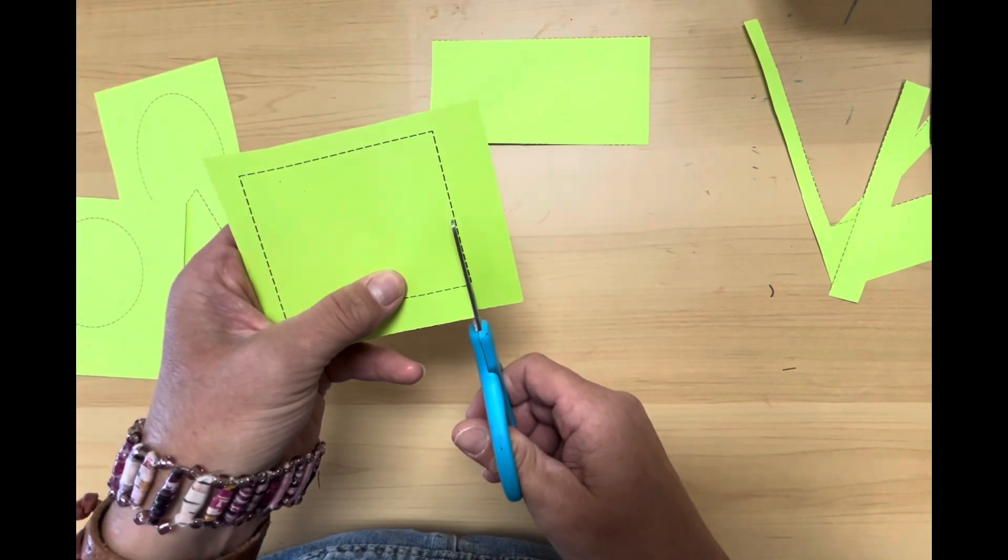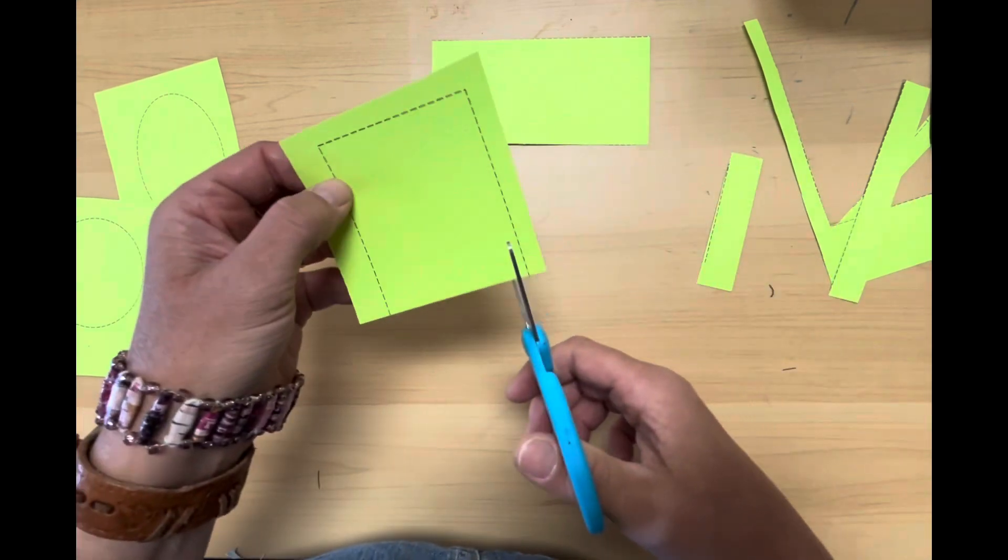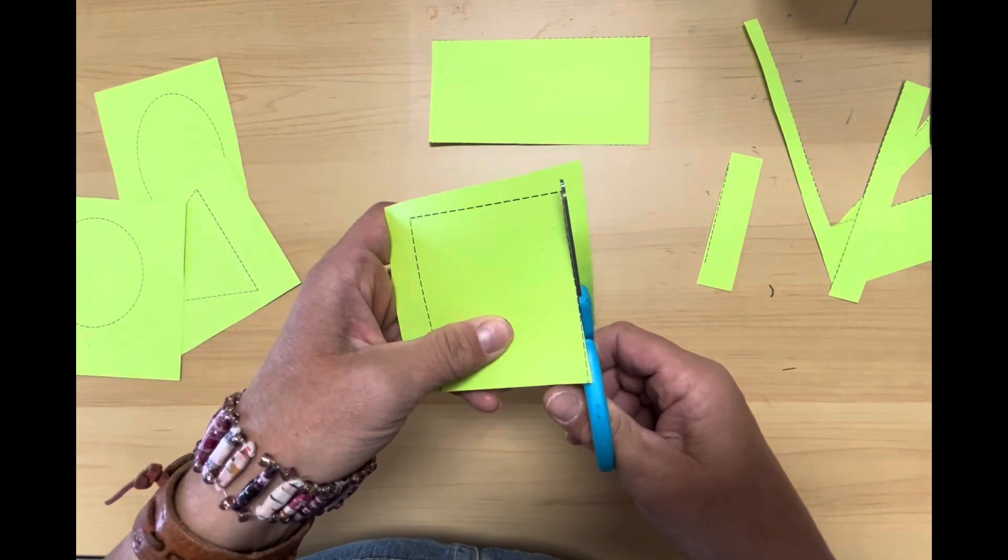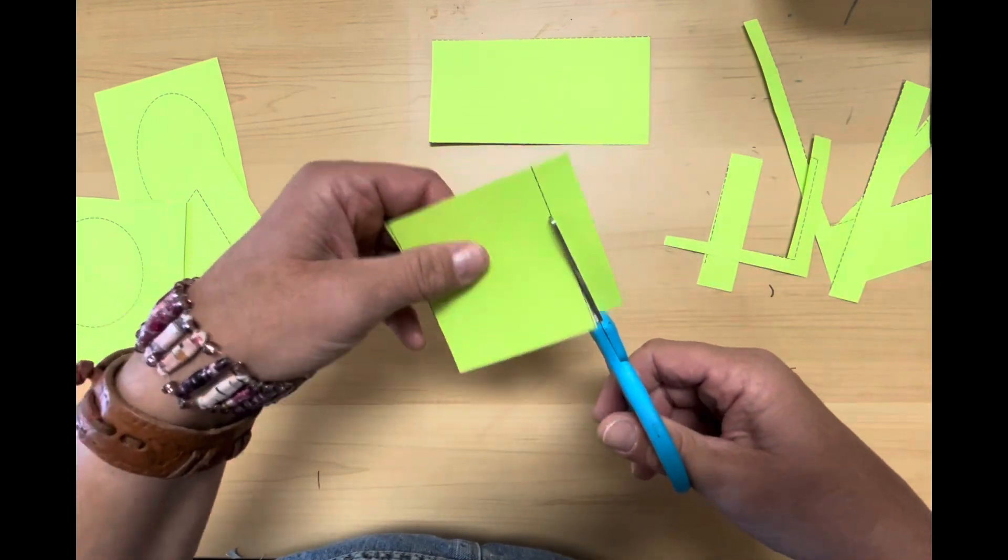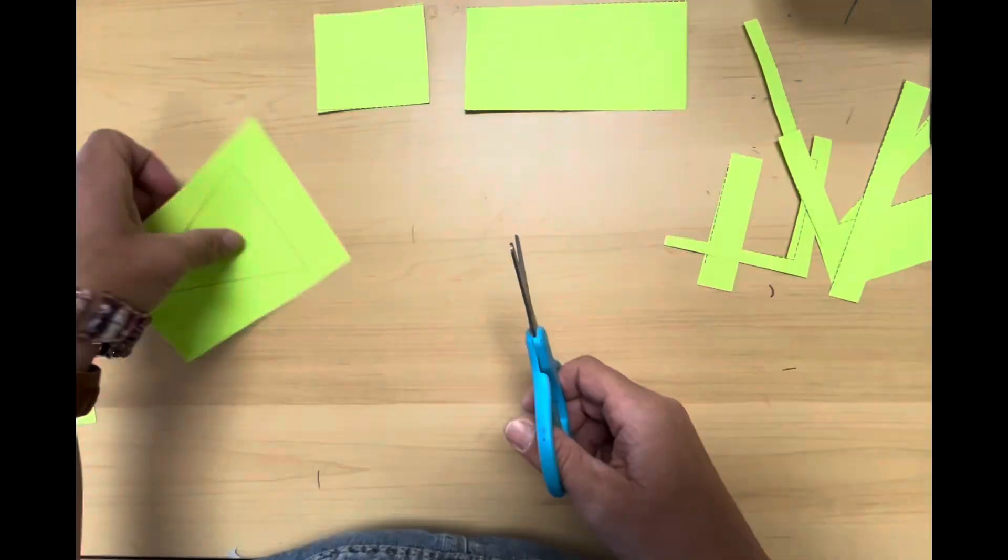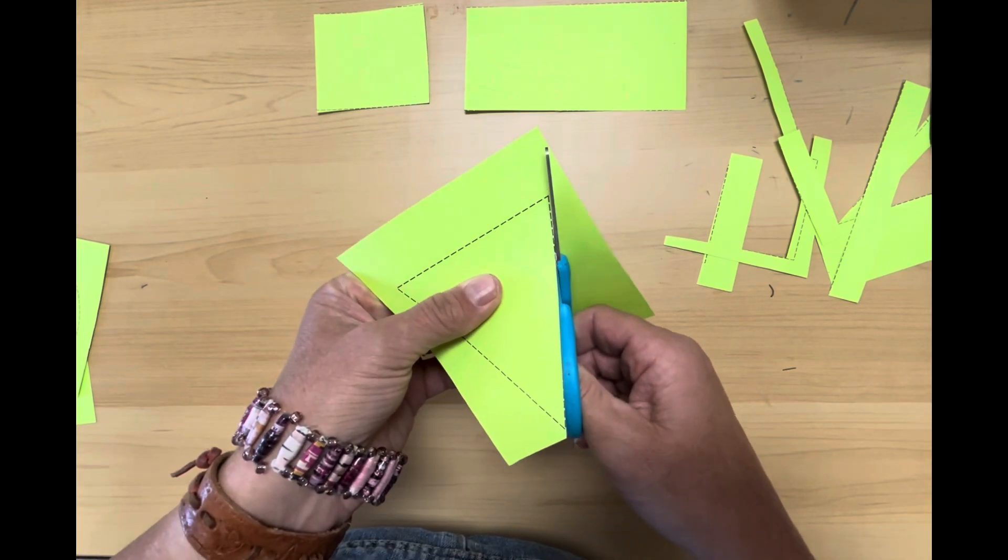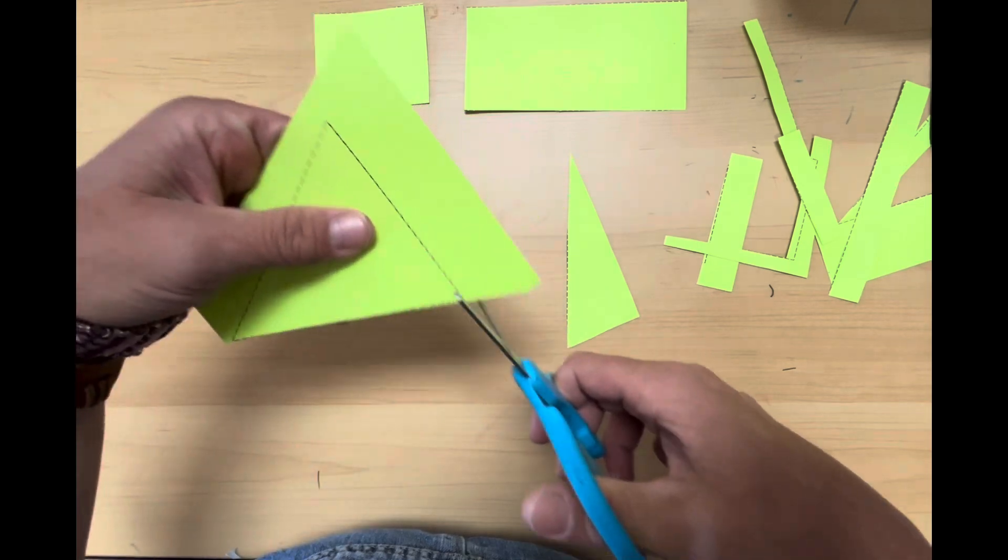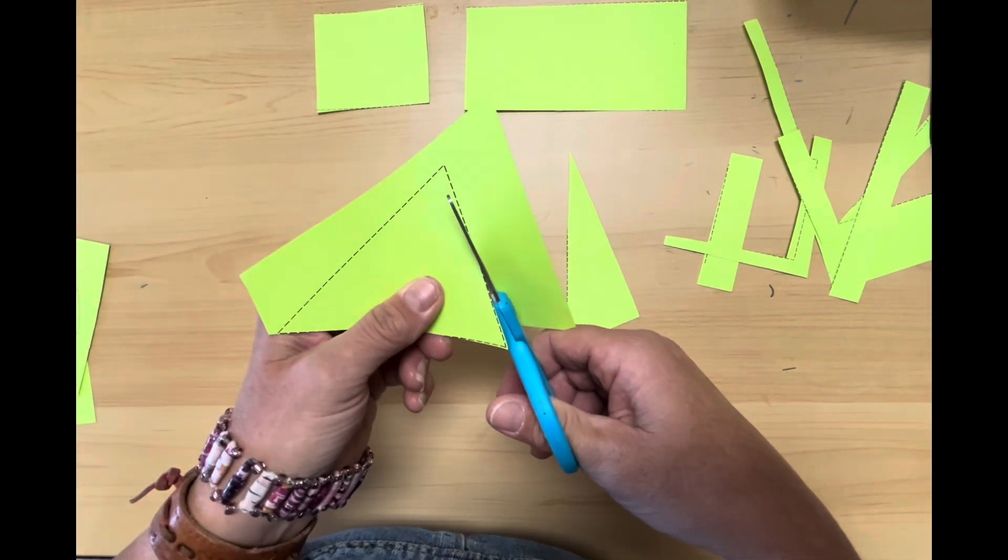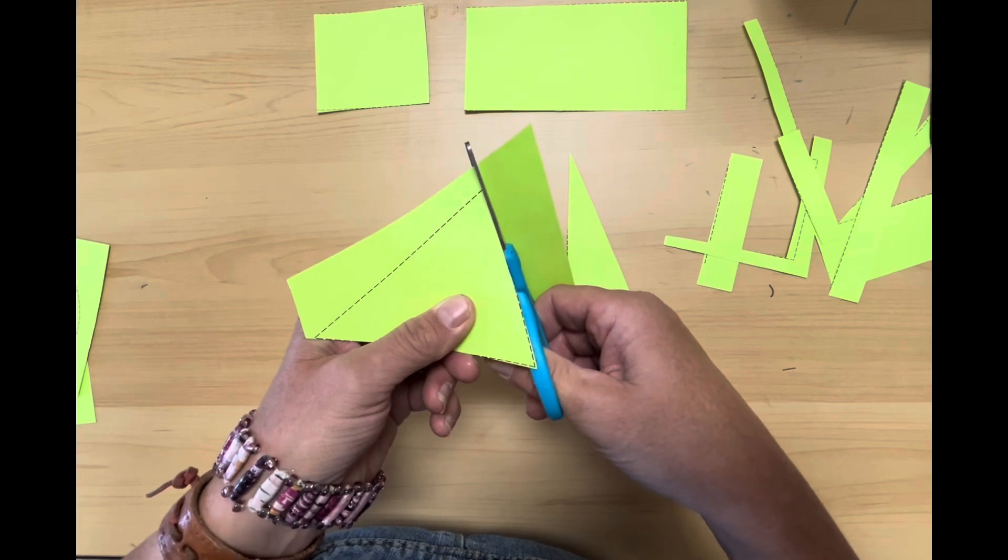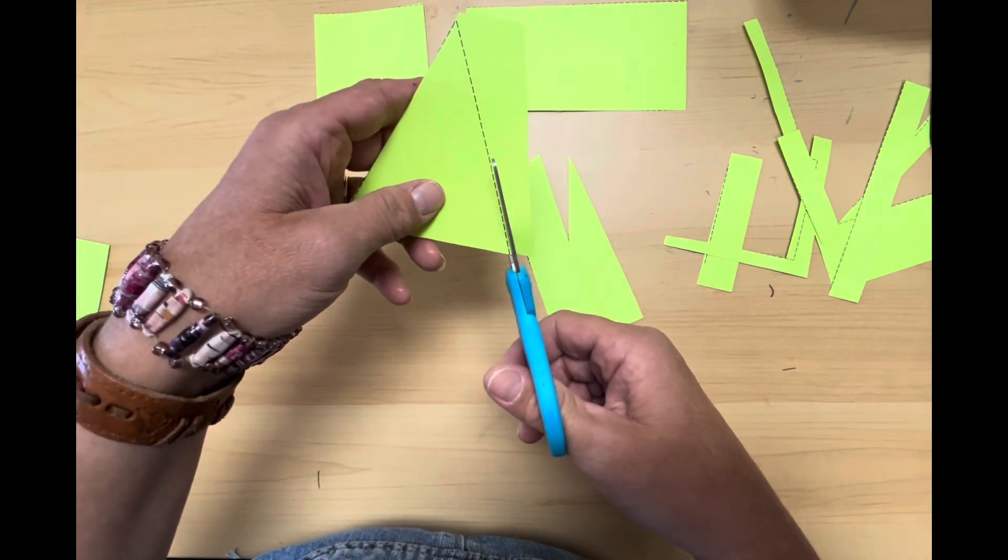Now for my square, once again, on the line, off the side. When you cut, cut slowly. I'm cutting my triangle. I go off the side of the paper, go slowly on the line, off the edge of the paper, and for my final cut.